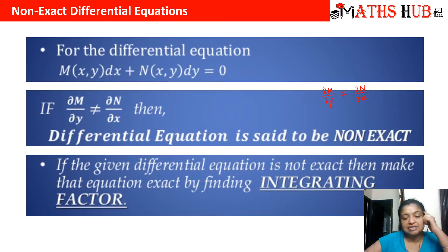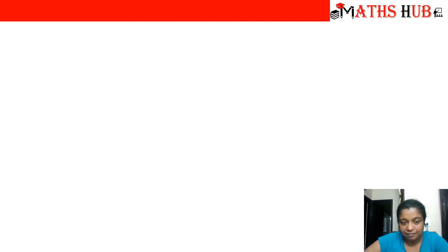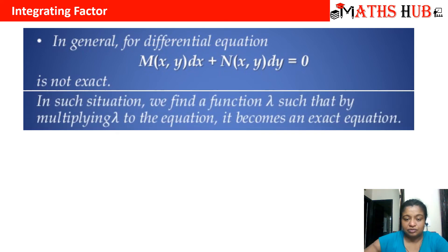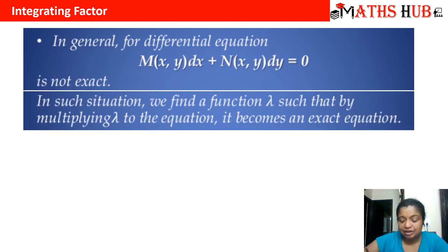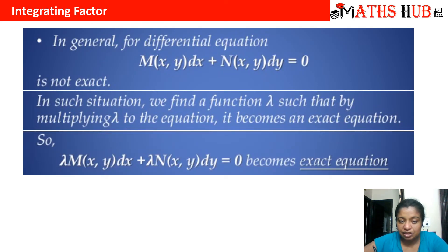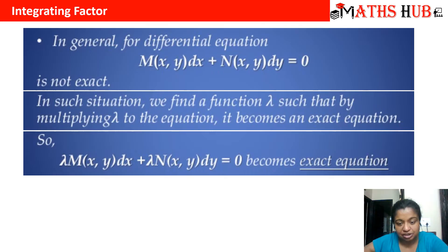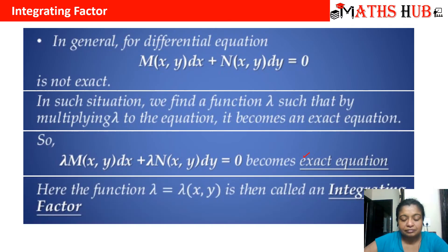Now how do we search for these integrating factors? There are various methods, and we will cover the first method today. The idea is: suppose this equation is not exact, and we are able to find a function lambda which makes this equation exact. We multiply the equation to get lambda·M dx + lambda·N dy = 0, which makes it an exact differential equation, and once it is exact you know how to solve it. So here lambda will be called the integrating factor.